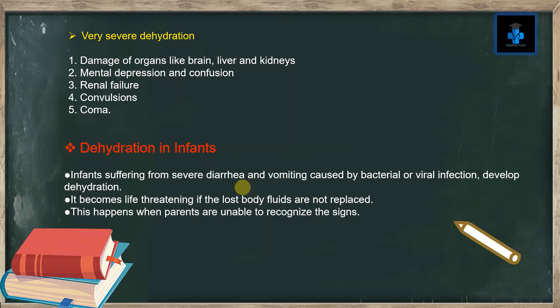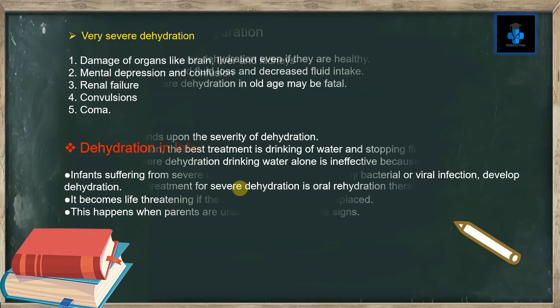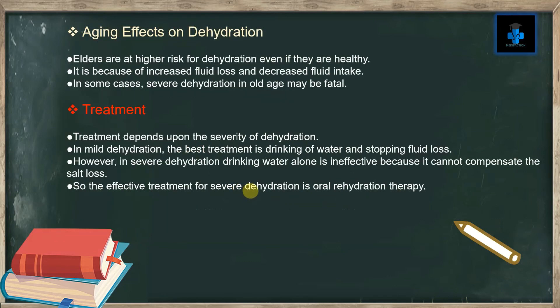Dehydration in infants: Infants suffering from severe diarrhea and vomiting caused by bacterial or viral infection develop dehydration. It becomes life-threatening if the lost body fluids are not replaced. This happens when parents are unable to recognize the signs.